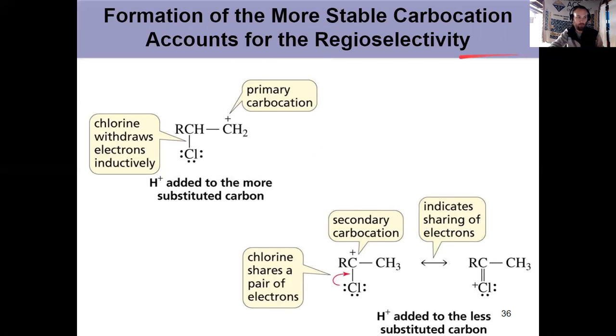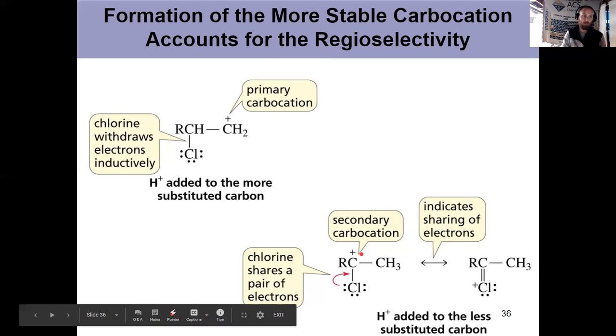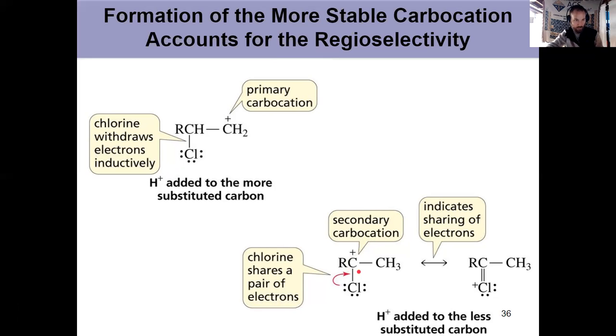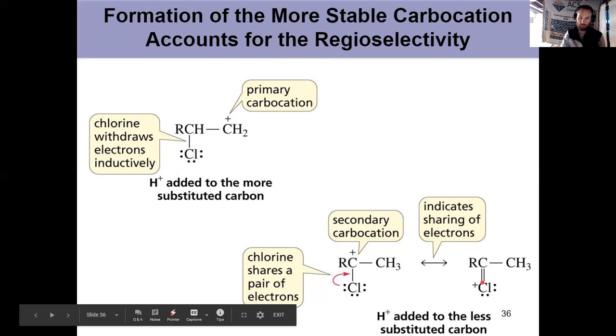Again, because it goes through the more stable carbocation, that gives me the regioselectivity of the reaction. If it was happening here, it's forming a primary carbocation, and then chlorine is going to further decrease that stability by inductive electron withdrawal. Here I form a secondary carbocation, which is more stable. But it's even more stable than you would anticipate because chlorine can actually donate a little bit of electron density there, share some electrons into that bond and stabilize the positive charge.